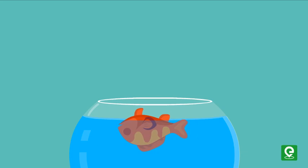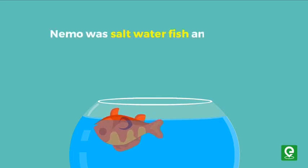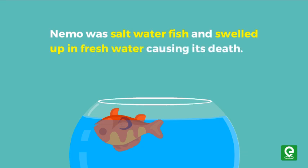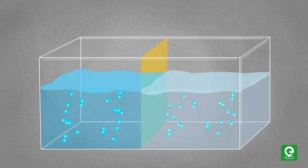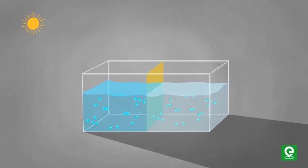Do you know why it happened? Nemo was a saltwater fish. That's why it did not survive in freshwater. In addition to it, Nemo swelled up due to osmosis. What is osmosis?